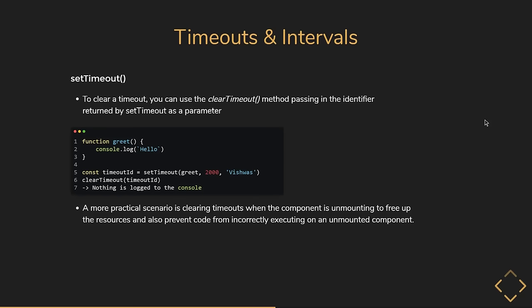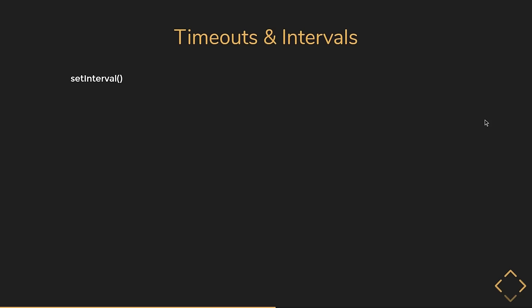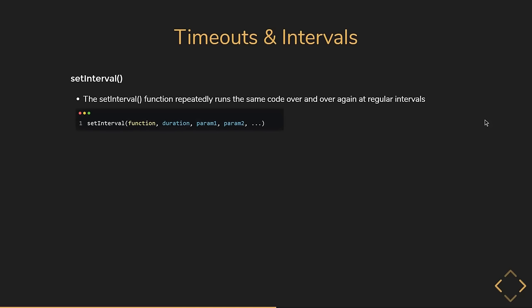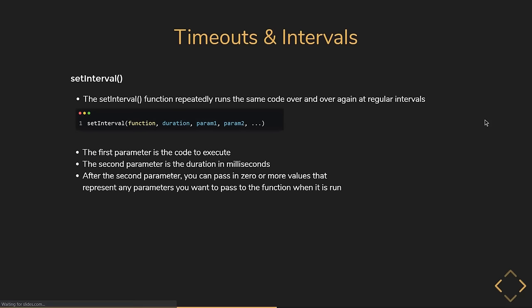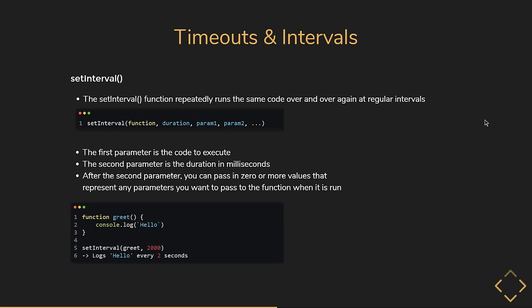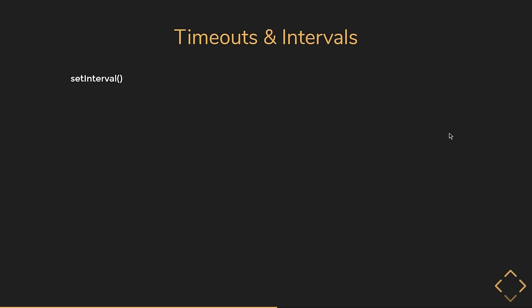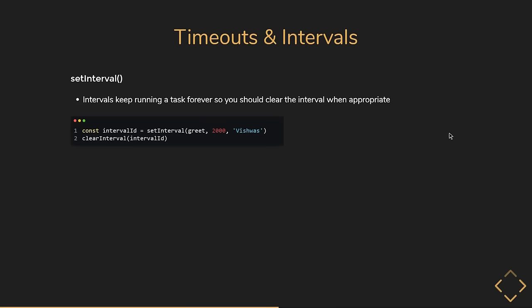setTimeout runs code once after a set period of time. If you want to repeatedly run the same code at regular intervals, use the setInterval function. The signature remains the same as setTimeout: first parameter is the code to execute, second is the duration in milliseconds, then zero or more arguments for the passed-in function. In this example, the function greet is called every two seconds, logging hello to the console every two seconds. Intervals keep running forever, so you should clear the interval when appropriate using the clearInterval function — capture the return value from setInterval and pass it to clearInterval.